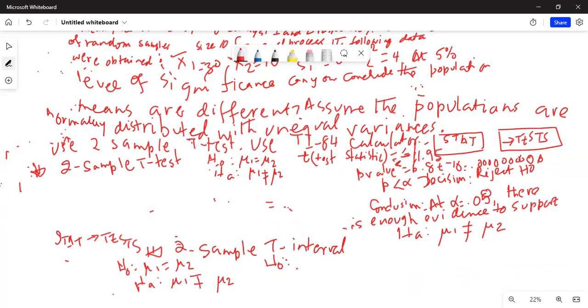Our null hypothesis is mu1 equal to mu2 and our alternate is mu1 not equal to mu2. That means our null hypothesis is mu1 minus mu2 equal to 0 and our alternate H sub a is mu1 minus mu2 not equal to 0.